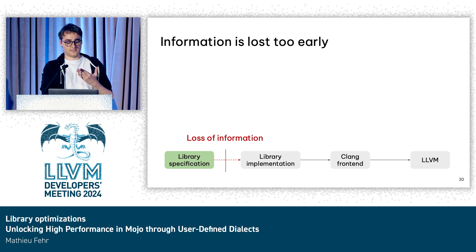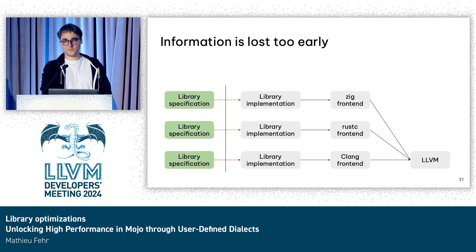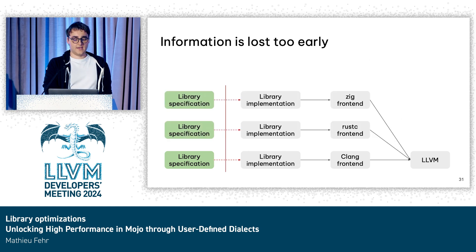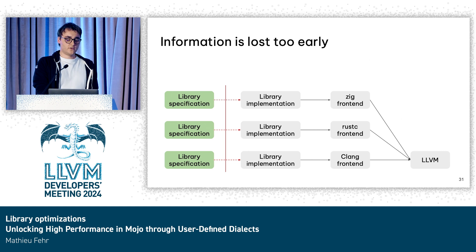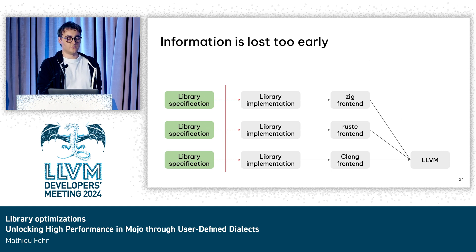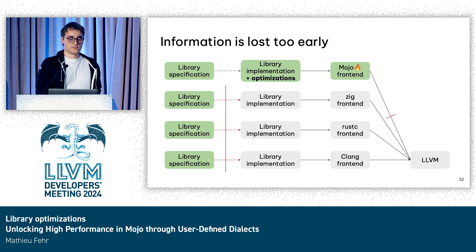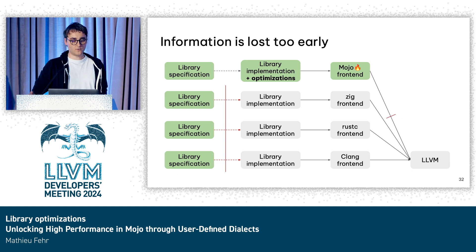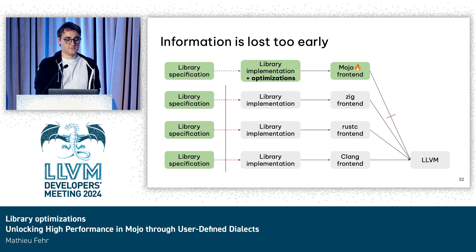This is going to happen the same way with Rust and with Zig. So what we've been doing is trying to figure out whether, with Mojo, we can actually do something a bit different. Can we, in our library implementation, add something more that would just allow us to solve these issues? And that something more is user-defined optimization using user-defined libraries.